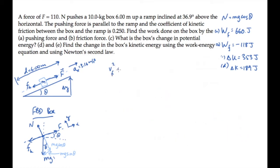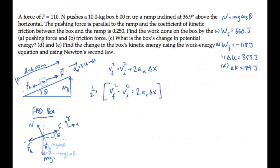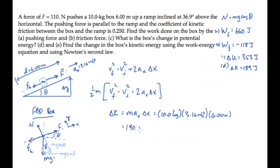The acceleration is constant, so we use the time-independent kinematic equation: v final squared equals v initial squared plus twice the acceleration times the displacement delta x, and solve for vf squared minus vi squared. Multiplying the whole equation by one-half m gives us the change in kinetic energy on the left. Substituting the known values gives us a change in kinetic energy of 190 joules — the same answer as part D, to within roundoff error.